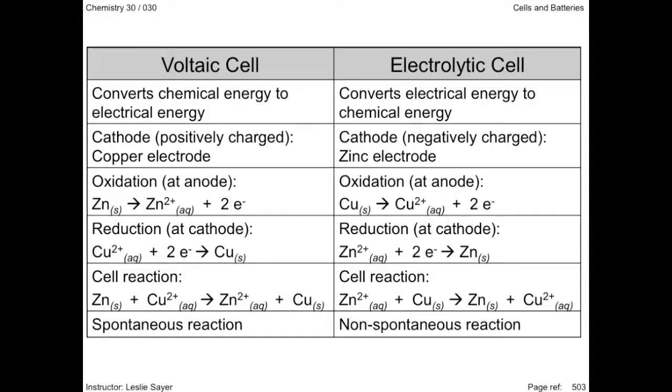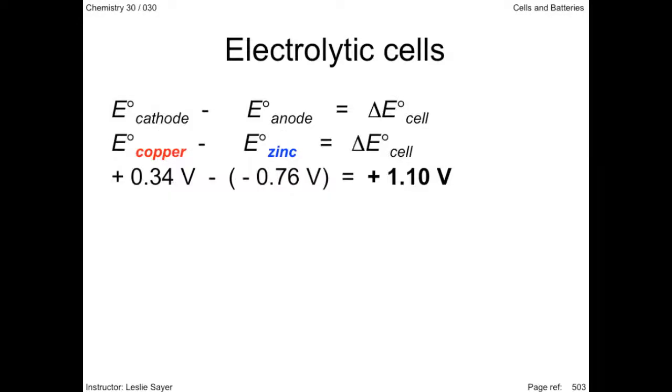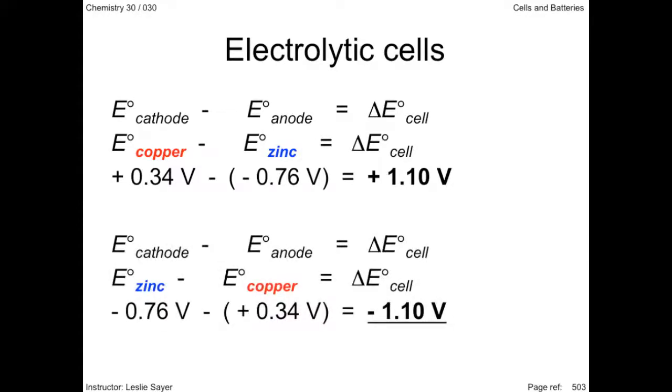So how much electrical energy are we talking about here? The standard cell potential for the voltaic Daniel cell is positive 1.10 volts. For the electrolytic Daniel cell, the standard cell potential becomes a negative value, indicating that the reaction is non-spontaneous. While the positive value means that this is the amount of electrical energy produced by the reaction, the negative value means that this is the minimum amount of electrical energy required for this reaction.